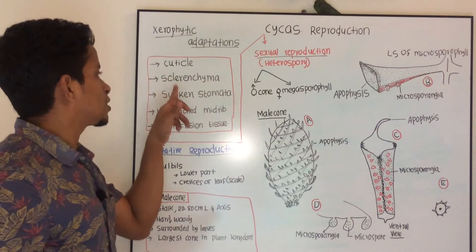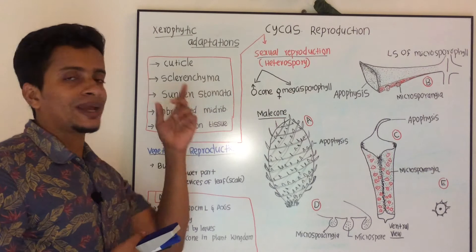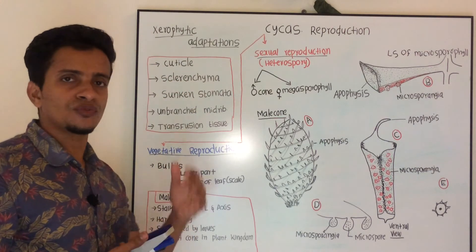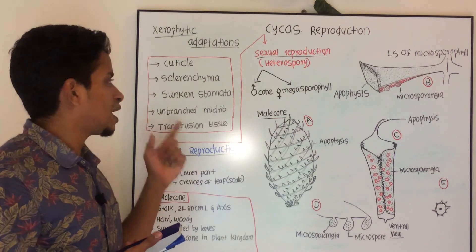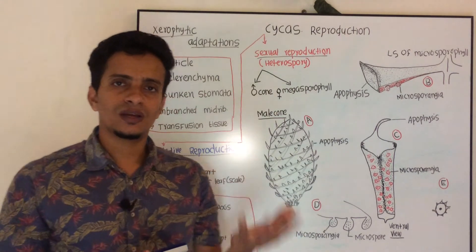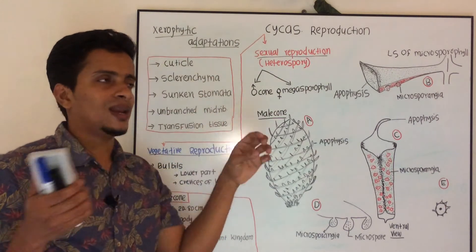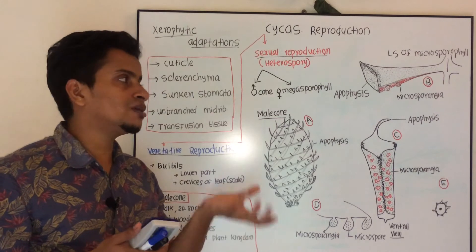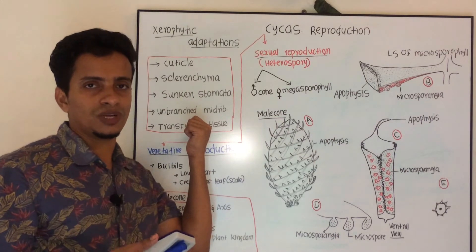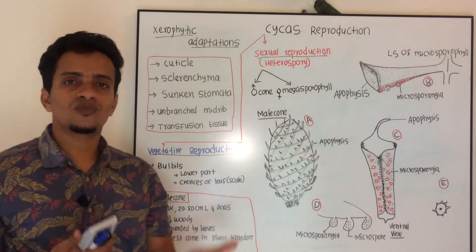The third point is the presence of sunken stomata. Deeply sunken stomata can be seen on the leaflets of Cycas. The midribs are usually unbranched, meaning lateral veins are absent. The function involves transfusion tissues. These features represent xerophytic adaptations.